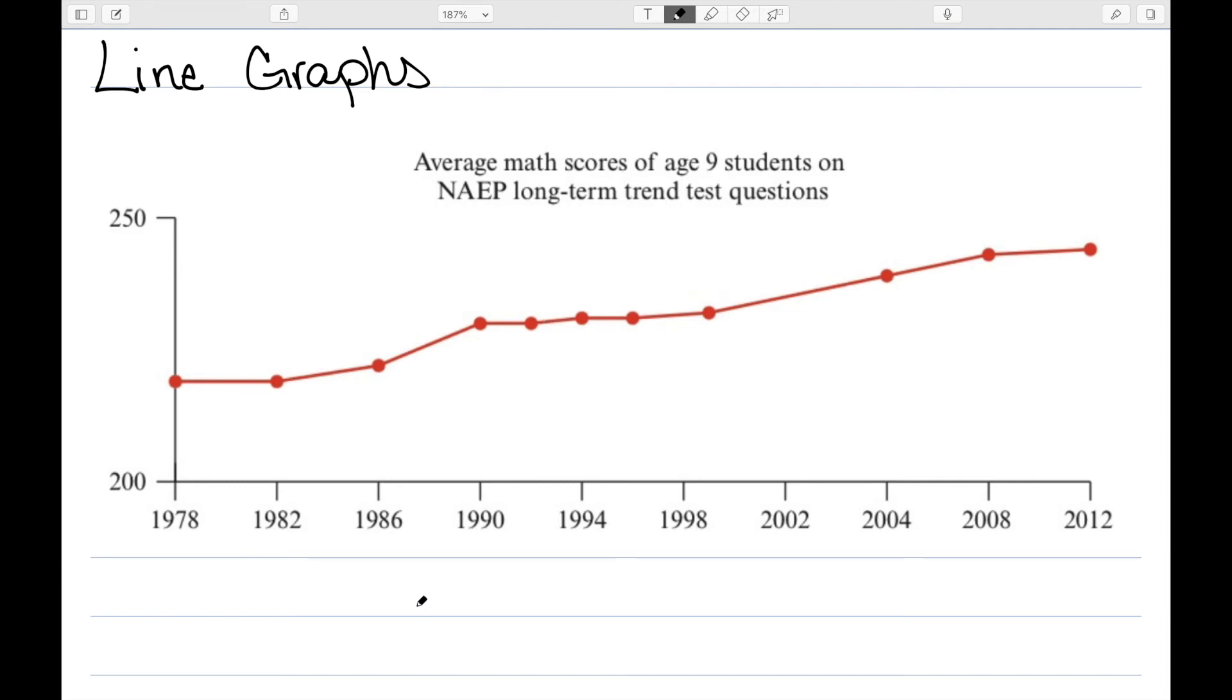Line graphs are appropriate for displaying continuously varying data, for example, data that varies over a time period.